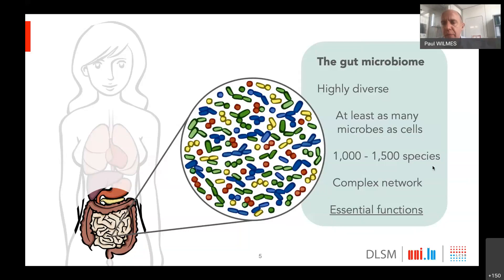Generally speaking, if we were to count all individual microbial cells just in the gut alone, we would find that these number at least as many cells as we have constituting the human body. It is a remarkable number — equivalent to the number of human cells that make up our body.